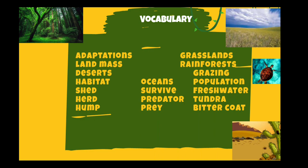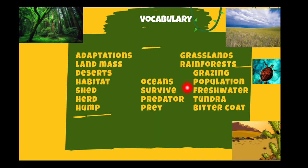Here is some of the vocabulary that we have learnt in this chapter: adaptations, landmass, deserts, habitat, shed, herd, hump, oceans, survive, predator, prey, grasslands, rainforests, grazing, population, freshwater, tundra, bitter cold.